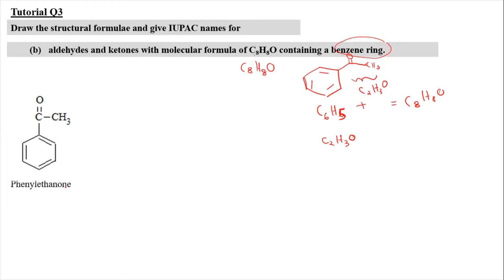This first structure is known as phenylethanone — carbon 1 and 2 form ethanone, with the phenyl group attaching at carbon 1. This is a ketone. For ketone, we cannot rearrange further within this molecular formula constraint.